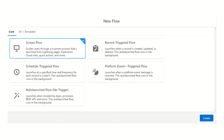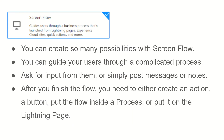So what is a screen flow? A screen flow guides the user through a business process, and it can be launched from Lightning pages, Experience Cloud sites, quick actions, and more. If you want to automate a business process that collects data from a user, you use a screen flow. You can create many possibilities with it — guiding users through complicated processes, asking for input, or simply posting messages or notes.